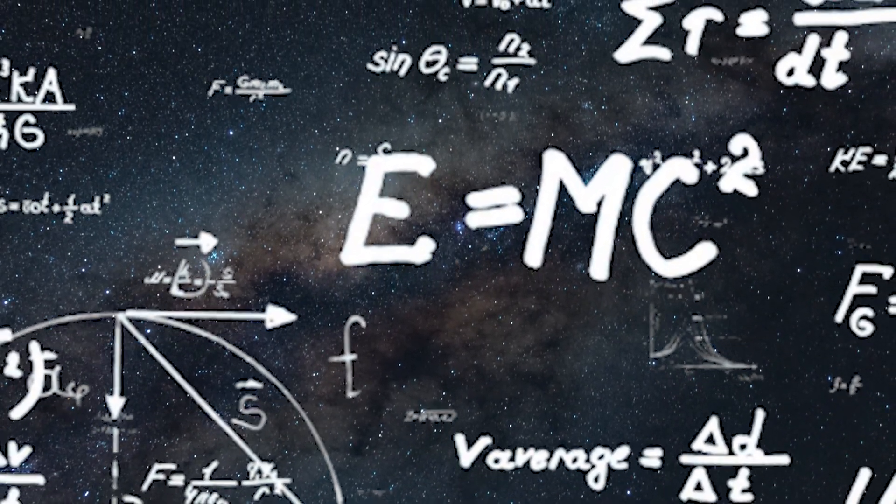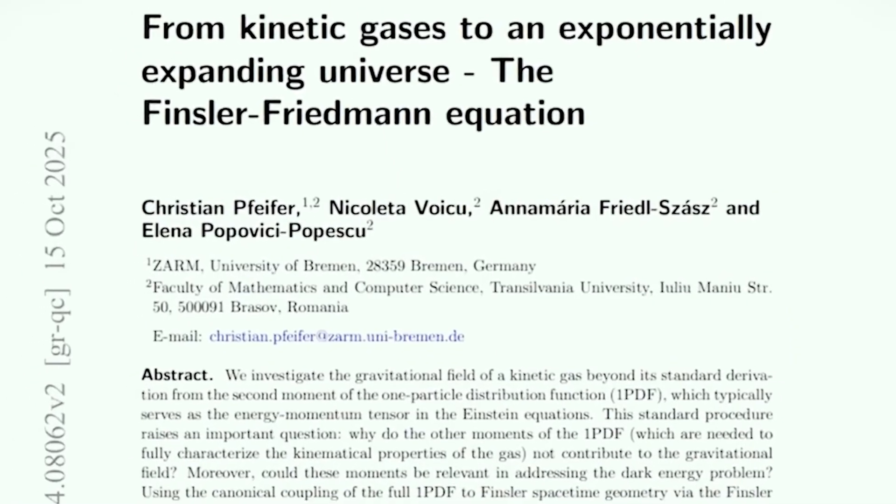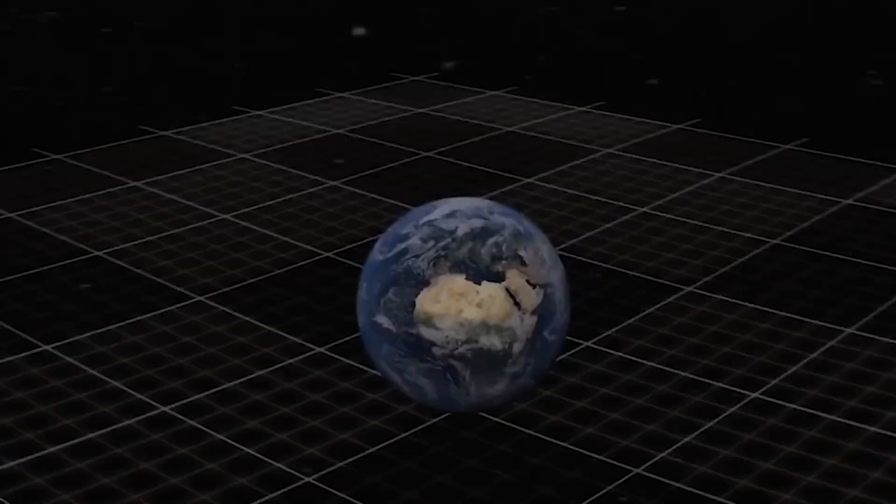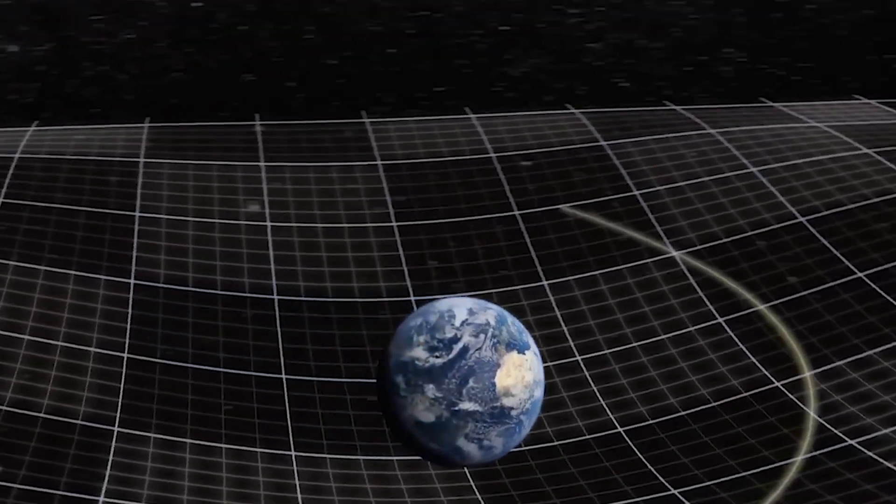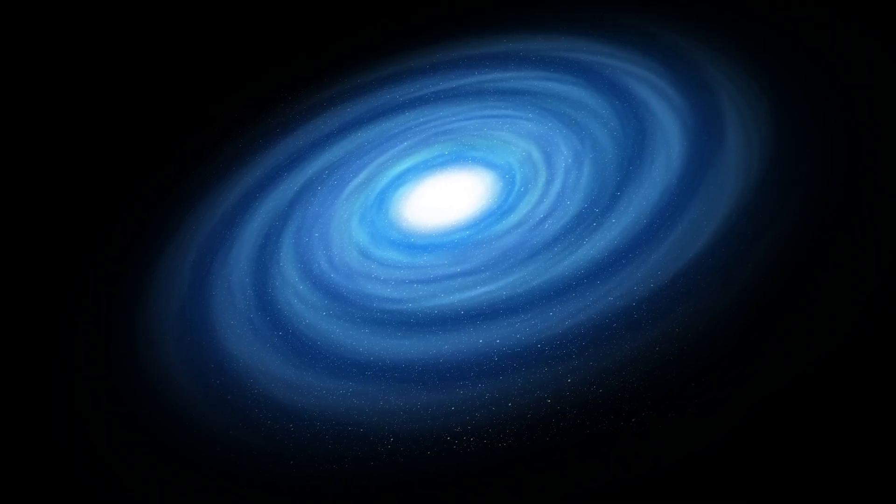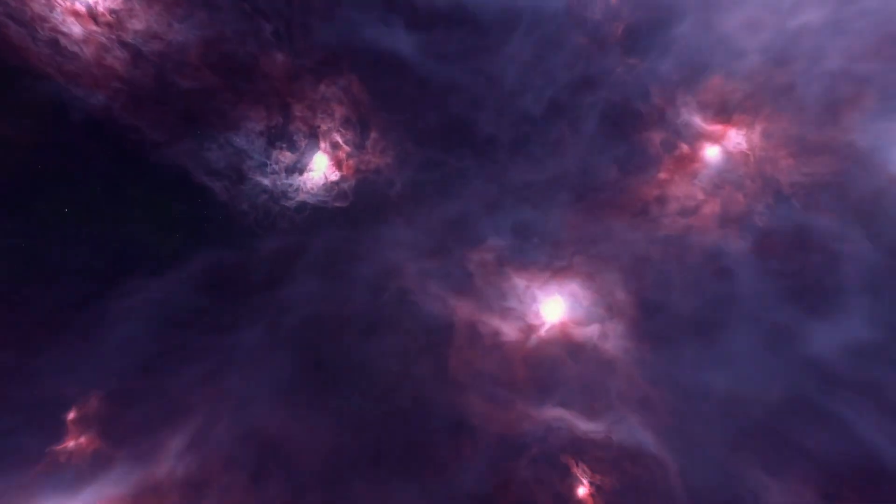Instead of stuffing unknown energy into the universe, they tweaked Einstein's geometry. They used Finsler geometry, which breaks the usual rule that space and time treat everyone equally. In this version, the universe gets a bit picky - direction and motion matter. By reworking the Friedman equations, the ones that tell the universe how fast it's allowed to expand, the researchers made a wild discovery: even when you remove absolutely everything, the universe still speeds up.